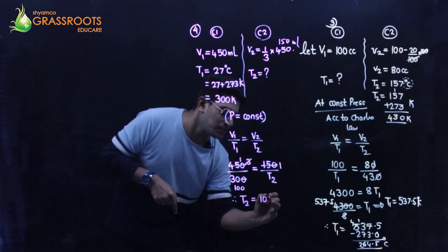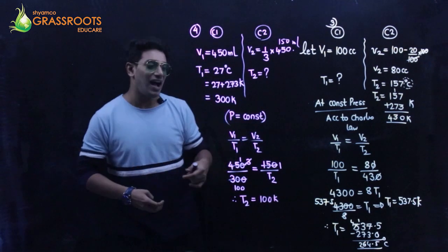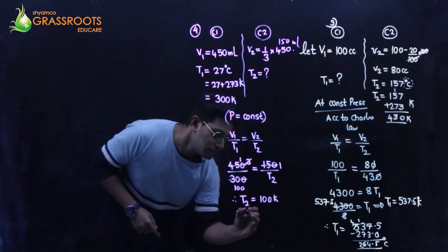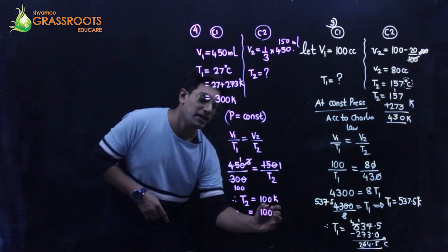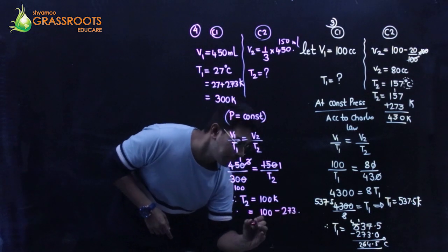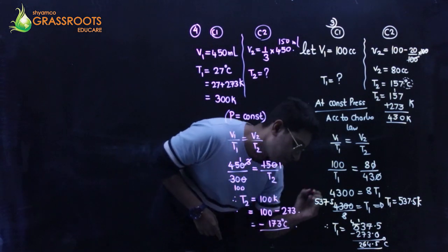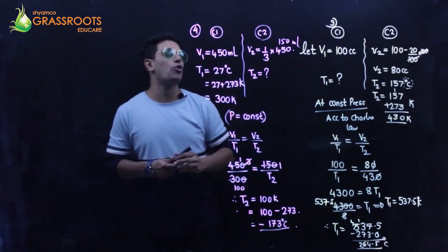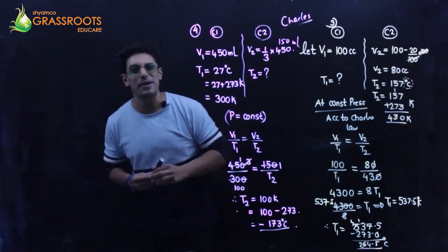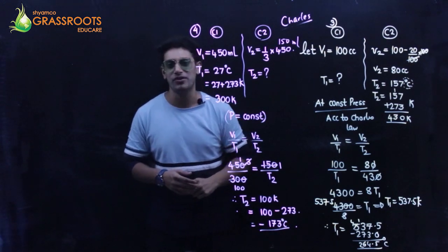Temperature two = 100 Kelvin. Converting back to Celsius: 100 − 273 = −173°C. These are the two sums based on Charles' law, where pressure remains constant.